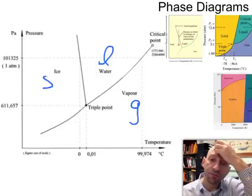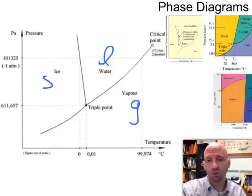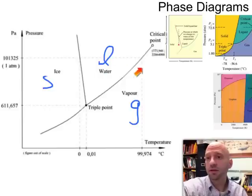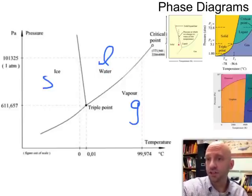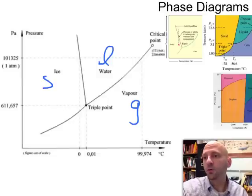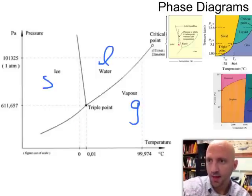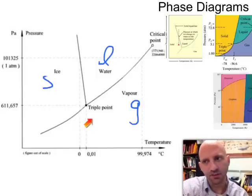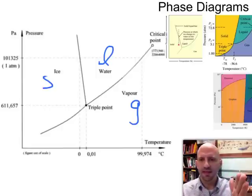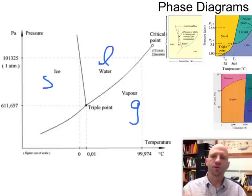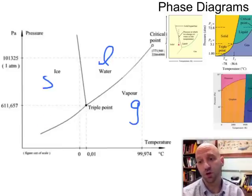Let me remind you of a few terms. Going from solid to liquid is melting; liquid to solid is freezing; liquid to gas is evaporation; gas to liquid is condensation; solid right to gas is called sublimation; and gas directly to solid is called deposition. So there are the six different phase change processes.